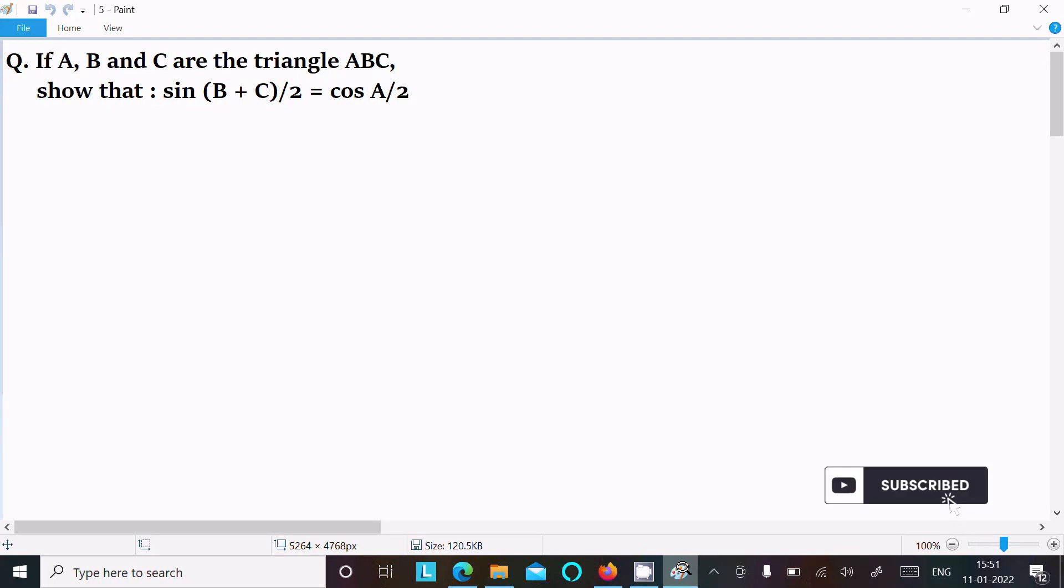If A, B, C are the angles of triangle ABC, let's see the answer. First, we know the sum of angles of a triangle: A + B + C = 180 degrees. Now here B + C is there, so...